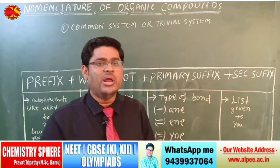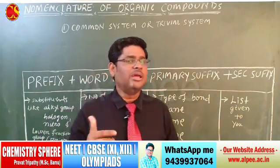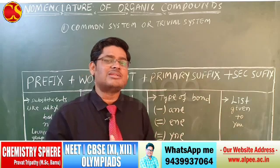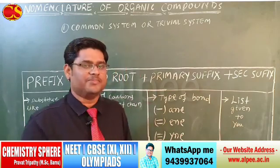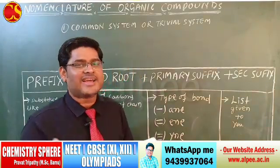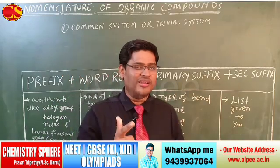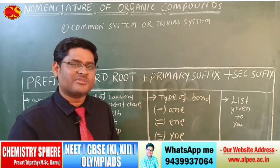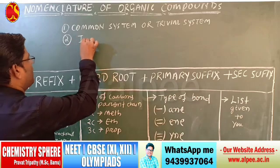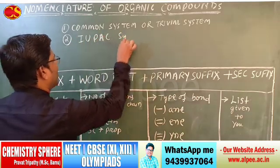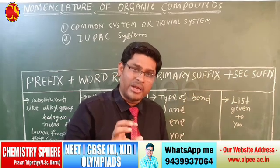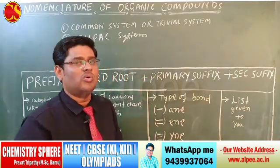A new system was required. From the new systems, one is the IUC — International Union of Chemists — and another is the ICC — International Congress of Chemists. Finally, the system we use today is the IUPAC system: International Union of Pure and Applied Chemistry. I will discuss nomenclature of organic compounds according to the IUPAC system.